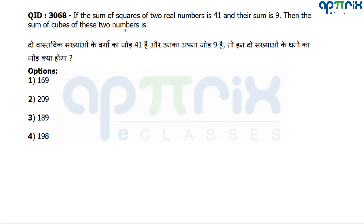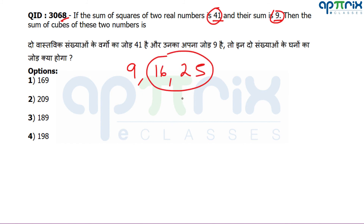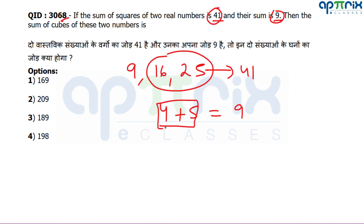Question number 68: The sum of squares of two real numbers is 41 and their sum is 9. Find the sum of cubes. Just find the two numbers by inspection: 4² + 5² = 16 + 25 = 41, and 4 + 5 = 9. Both conditions are satisfied. The numbers are 4 and 5. Sum of cubes = 4³ + 5³ = 64 + 125 = 189.